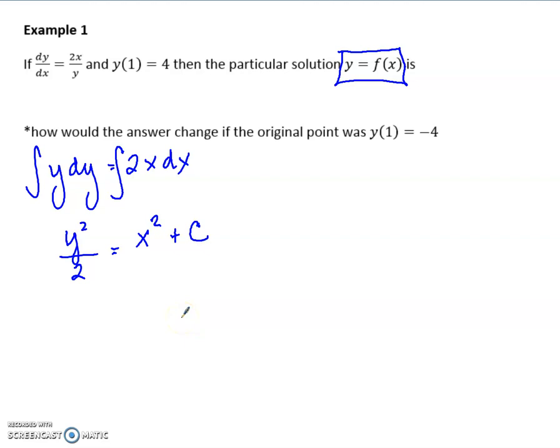Well, that's why they gave us this original value. So if we plug in 1 for x and 4 for the y, now we know the output. We end up with 4 squared, 16 over 2, which is 8, equals 1 plus c. So we get c is 7. So we can go back to this equation, y squared over 2, and make it x squared plus 7.